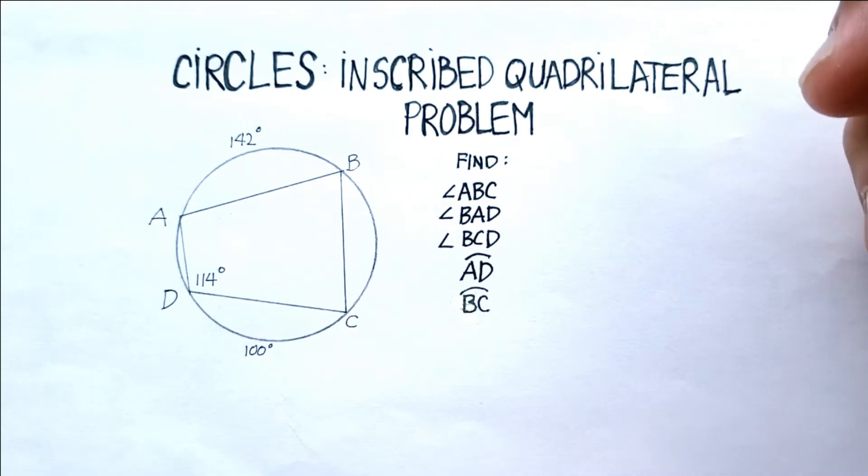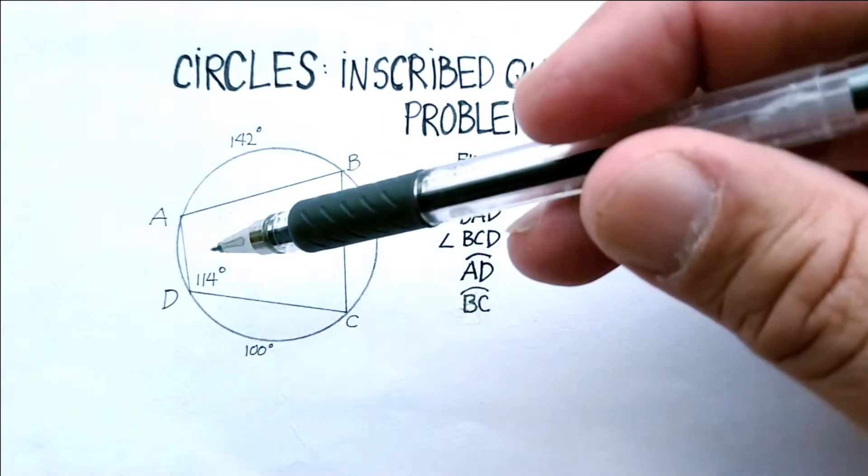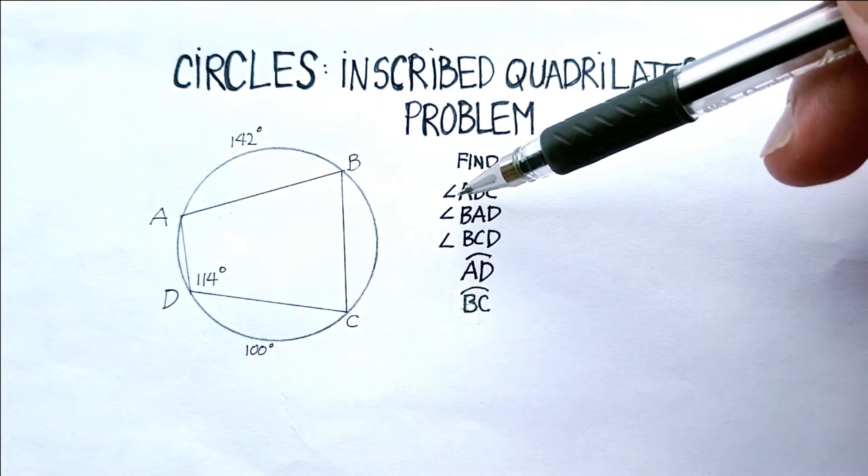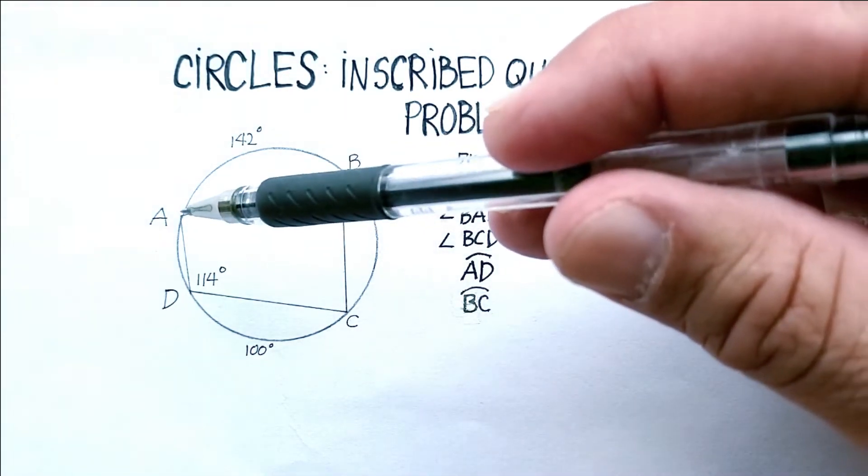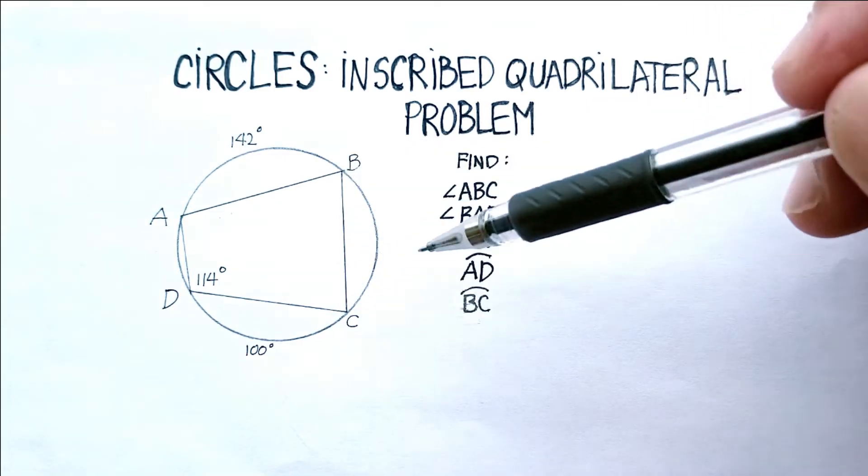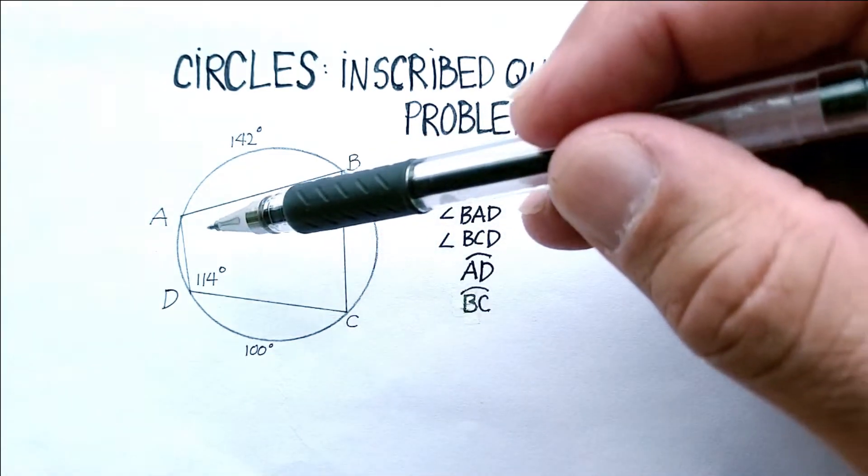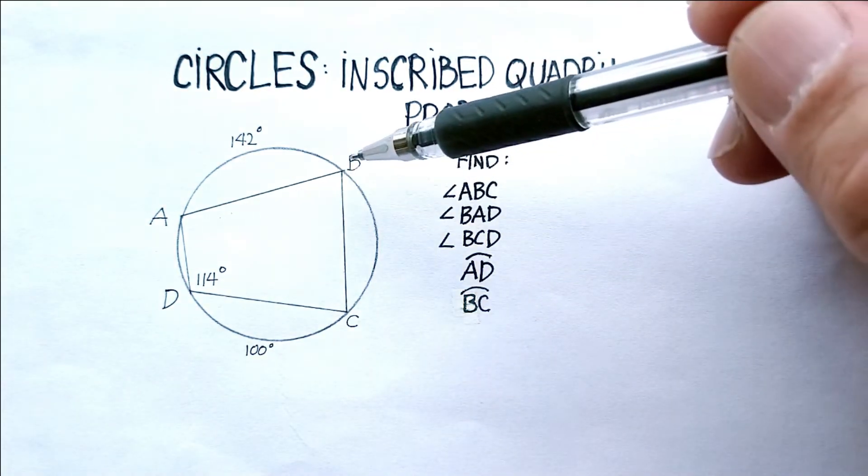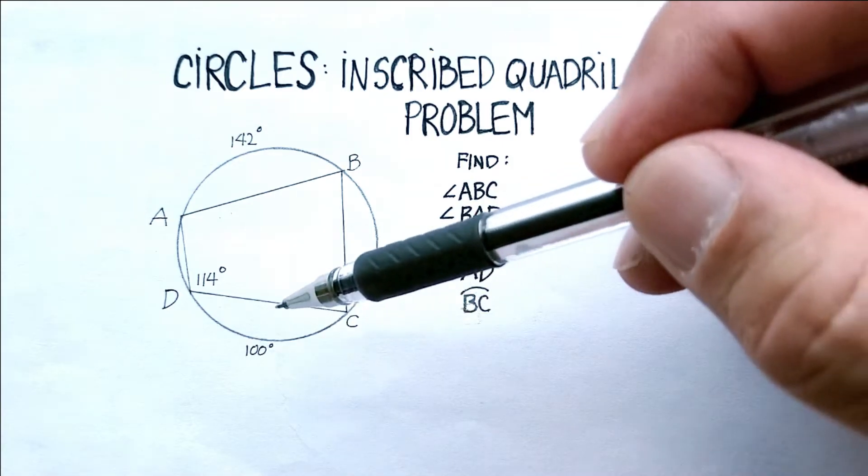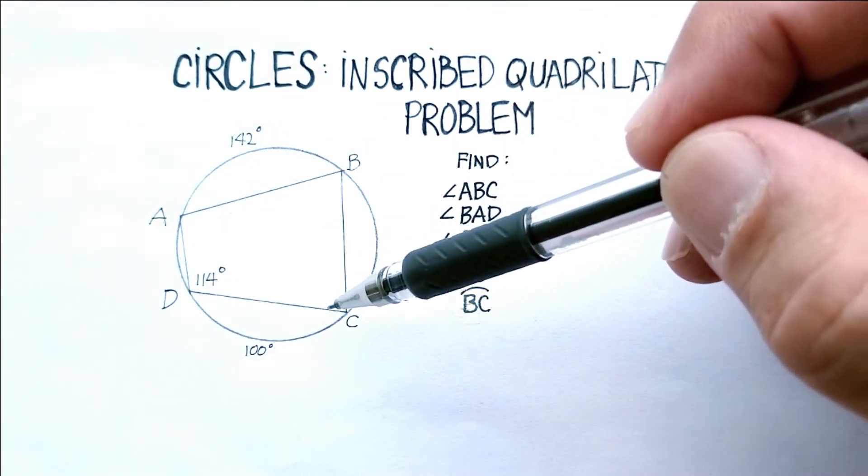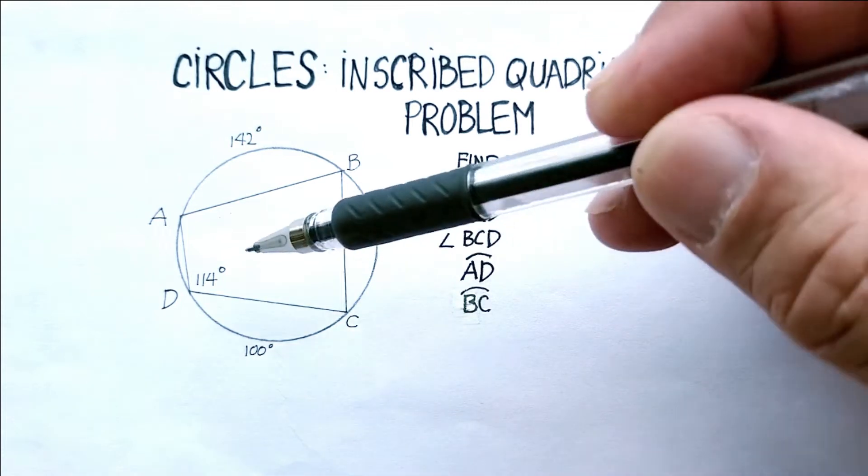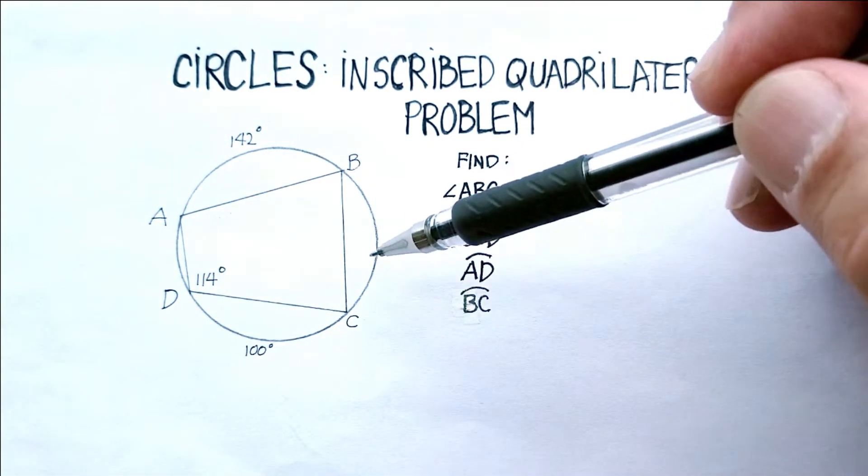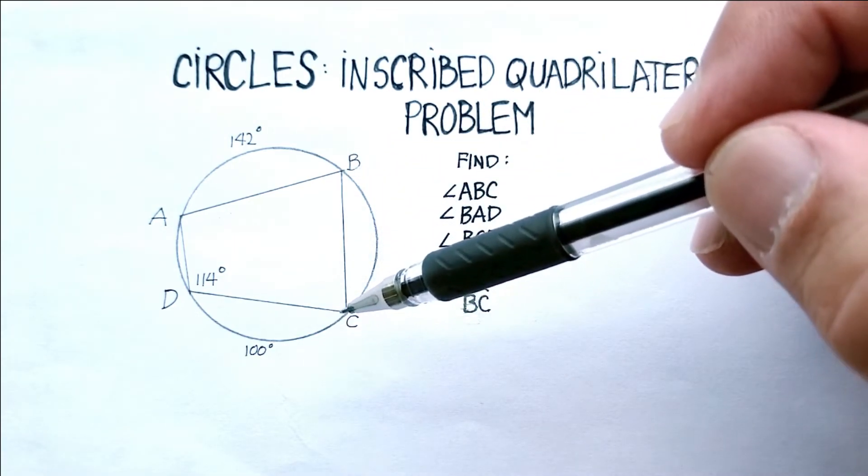In this video we're going to solve the following inscribed quadrilateral. Basically what we're going to look for is angle ABC, this one right here, angle BAD, this angle right there, angle BCD, this angle right here, and finally these two arcs. Arc AD, this little missing part right here, and arc BC which is this arc right here.